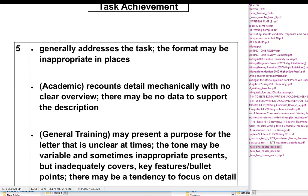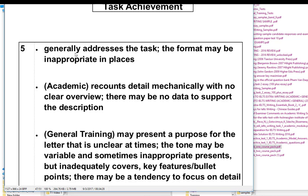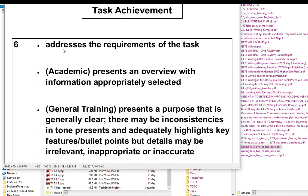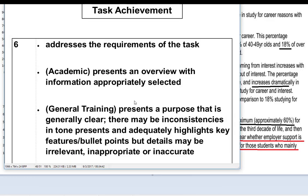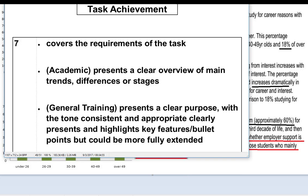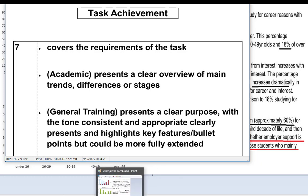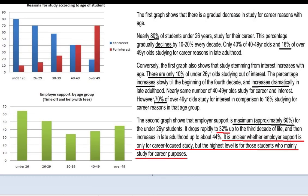Task achievement: how well does this script do? We can't say there's no overview, because obviously there is one. So it presents an overview with information appropriately selected — they selected all the information that described the major trends. Let's see if they can get a 7. Covers the requirements of the chart: overview of main trends, differences in stages. If we go according to this, it's possible it could get a 7, but possibly just a 6.